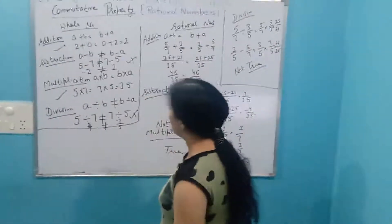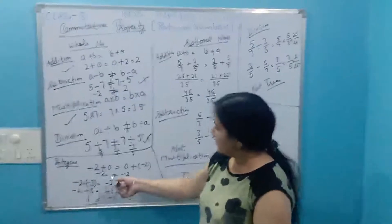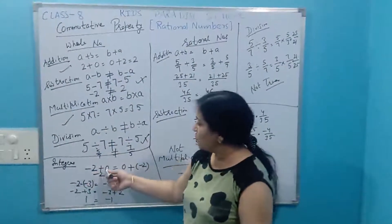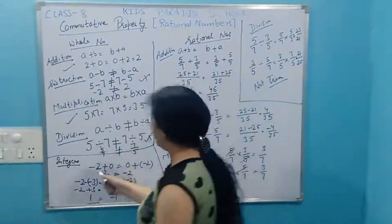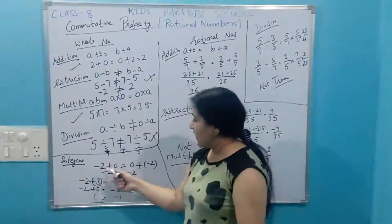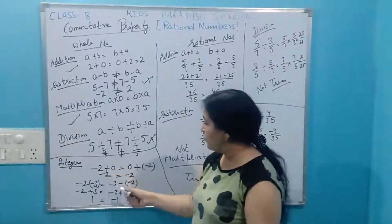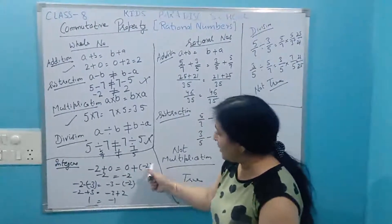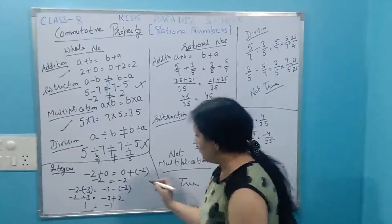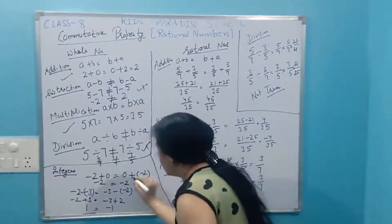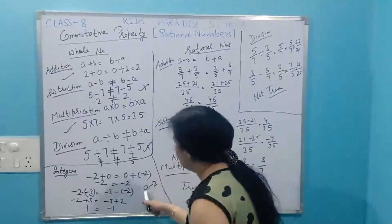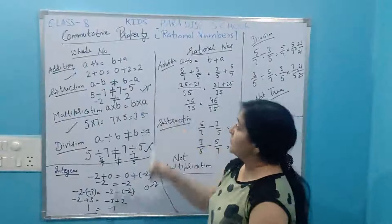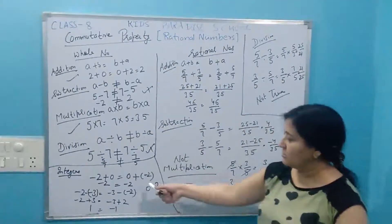In a similar way for integers: if we take two integers, minus two and zero, and add them — minus two plus zero is minus two, and zero plus minus two is also minus two. Both are equal. It means in the case of integers under addition, commutative property is true.